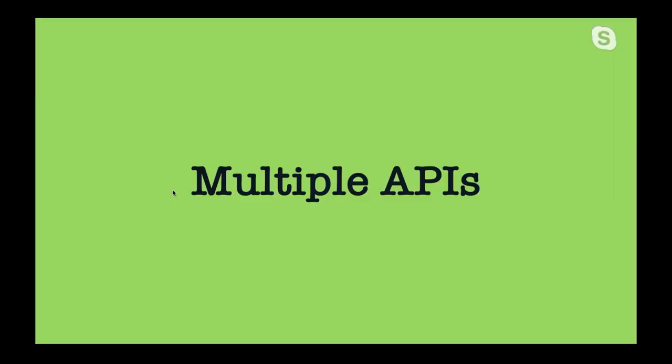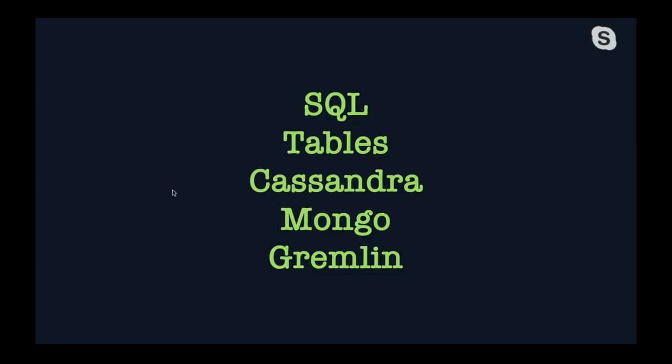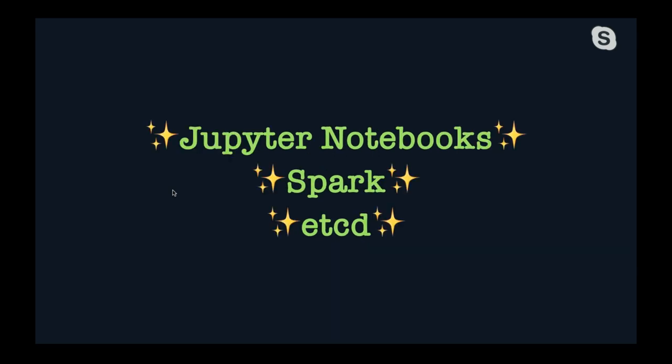Digging into the multiple APIs: we have SQL as the primary original API of Cosmos, a Tables API, a Cassandra API so you can talk to Cosmos like any other Cassandra system — great if you're coming from an existing Cassandra workload. Same thing for Mongo and Gremlin, built on open source tools so you can use existing drivers and SDKs. We also have things in the works: Jupyter Notebooks just hit public preview, and Spark and etcd are on the horizon.